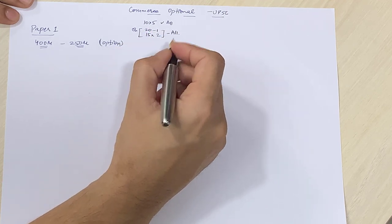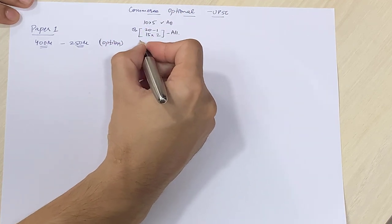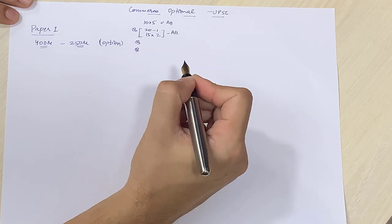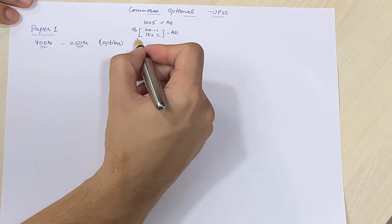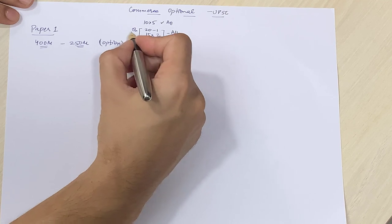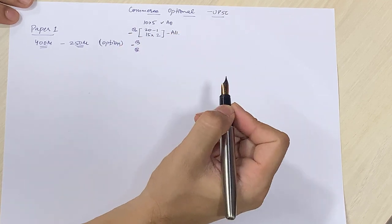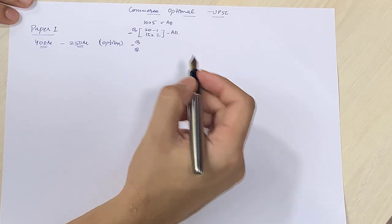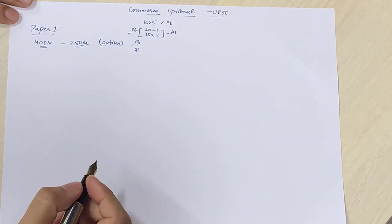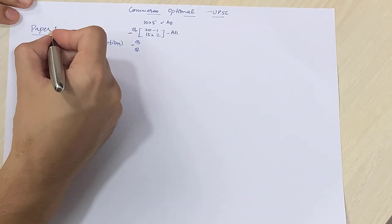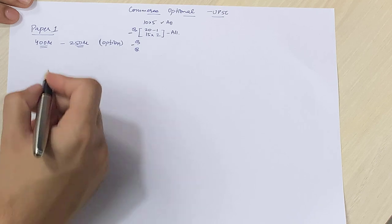But in each section, there are two sections. In each section, there are three questions. And you don't have to answer all. You have to answer any one or any two of these three questions. So this is something unique in UPSC optional. These are all the options in the following.